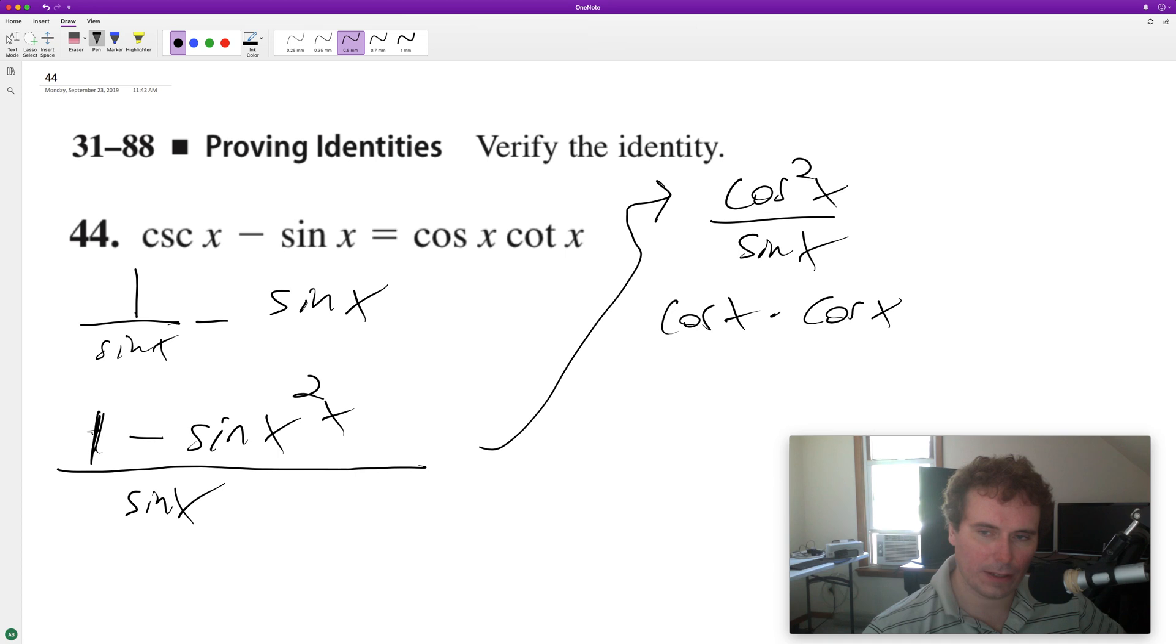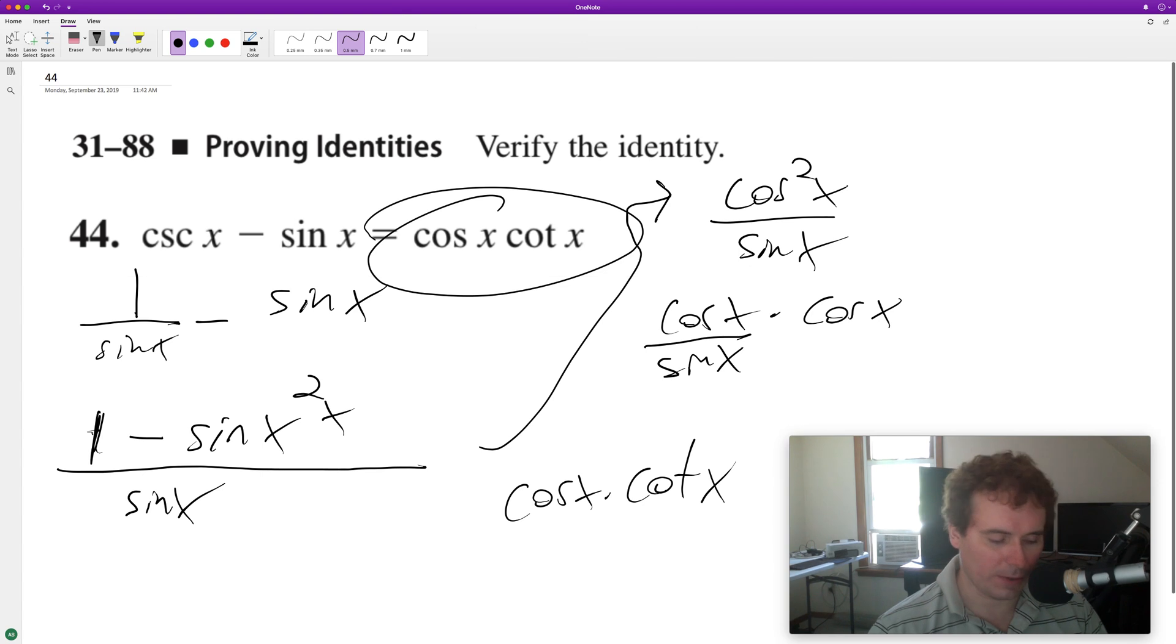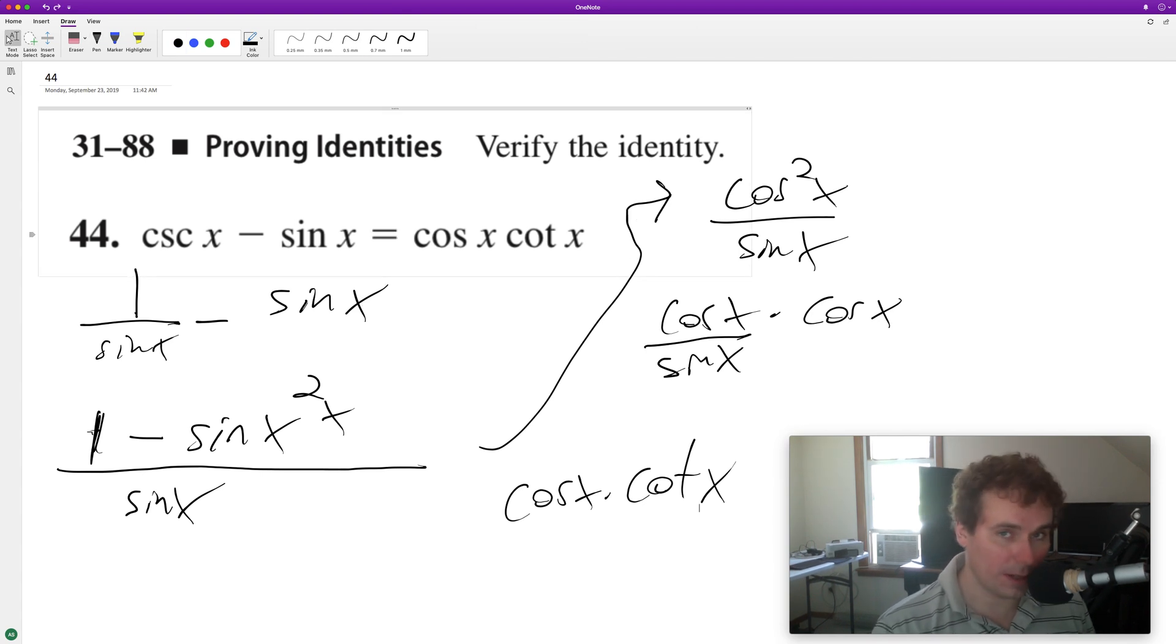And then we'll have sine of x on one of them, so this is equal to cotangent x. And then we'll have our cosine x and our cotangent x, which matches what we have on the right there. I hope this helps you out. Thanks for watching and have a great day.